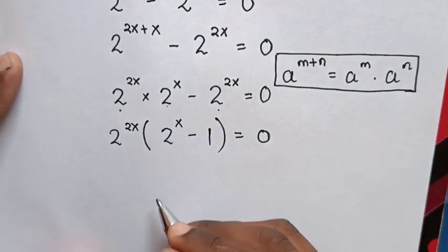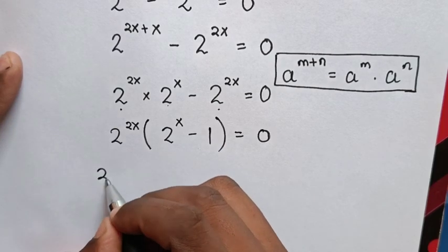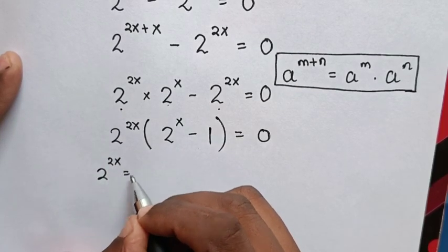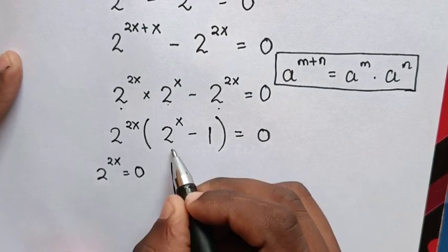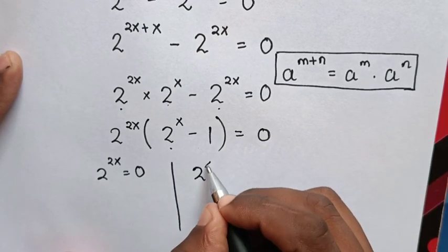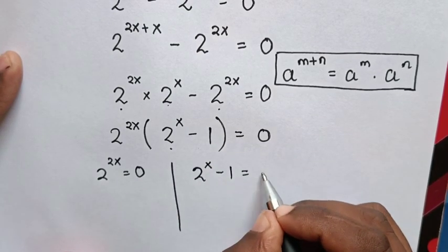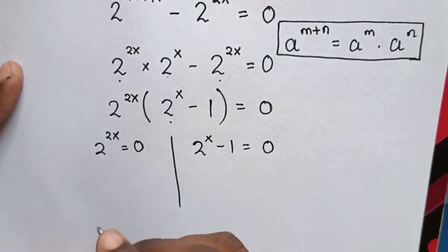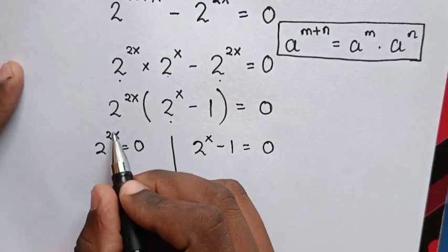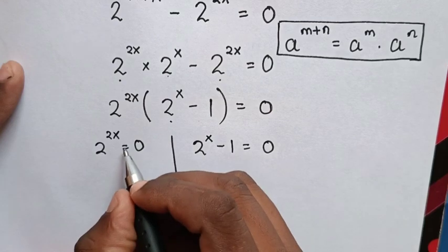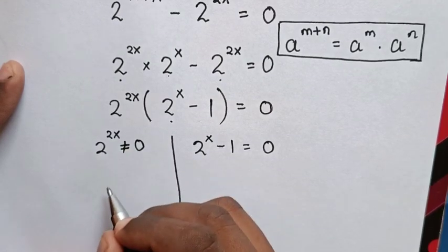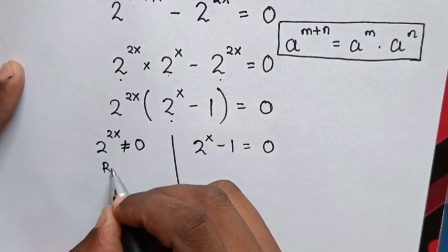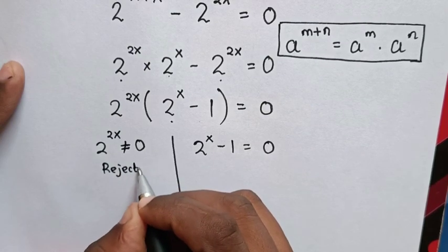Then in the next step we have two cases: 2^2x = 0, and another case 2^x - 1 = 0. But we know that 2 to any power cannot equal 0, so this solution is rejected.